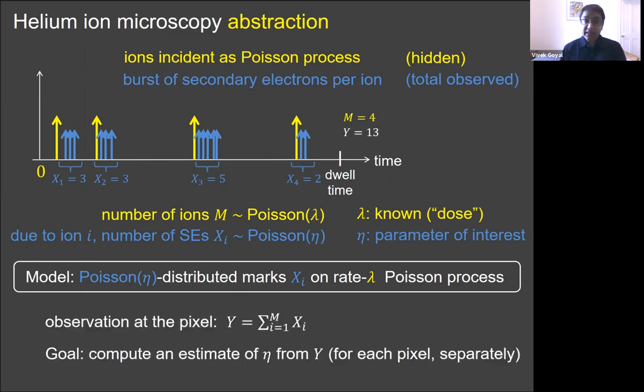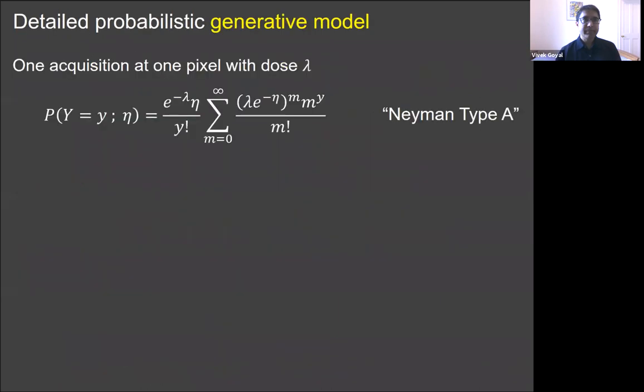Because we have a Poisson process and a fixed dwell time, the number of incident ions m is a Poisson random variable with a parameter lambda. Lambda is called the dose and we're going to assume that it's known. We model the number of secondary electrons per ion as also being Poisson distributed, each one of them having a Poisson parameter eta. So that eta is what we want to learn about the sample. That eta is the propensity to emit secondary electrons that we're trying to form an image of as we vary across the sample. A random variable associated with an arrival in a Poisson process can be called a mark. So our overall model is of a Poisson marked Poisson process.